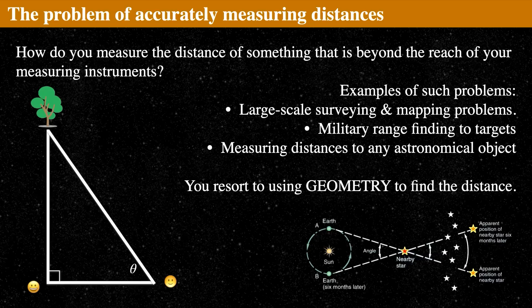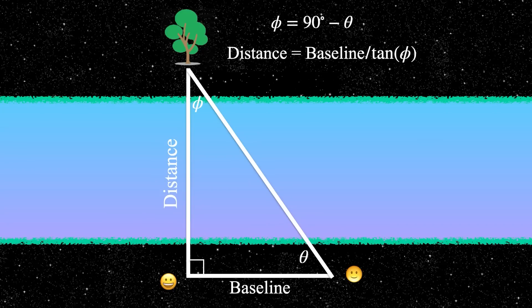Let's take a first step and see how we use geometry to get distances. One of the more simple ways is done pretty much all the time by surveyors. Surveyors use the process of trigonometry and triangulation in order to get distances.